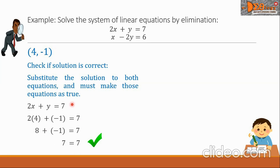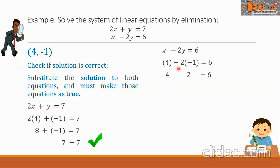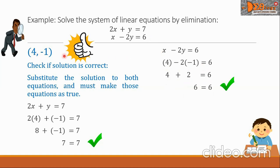Let us try the second equation: x minus 2y equals 6. Substituting x equals 4 and y equals negative 1, we have 4 minus 2 times negative 1 equals 6. Negative 2 times negative 1 is positive 2, so 4 plus 2 equals 6, which is 6 equals 6. This is correct. The solution makes the second equation true, confirming that our answer (4, negative 1) is correct and this is our final answer.